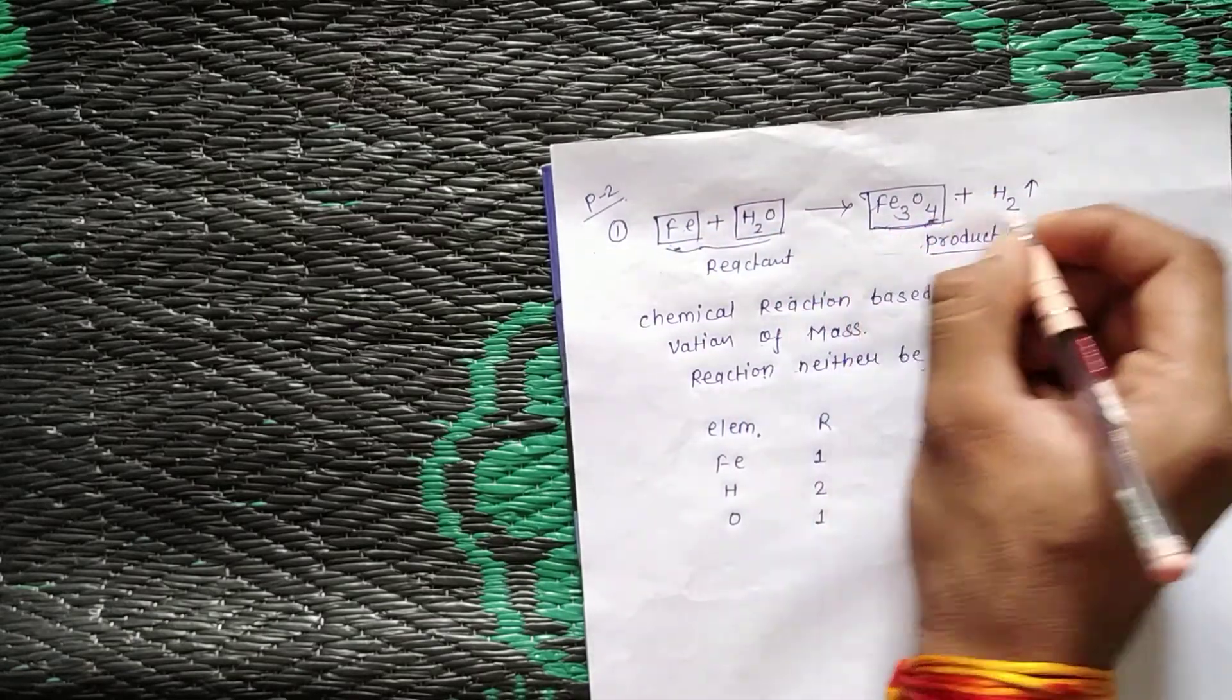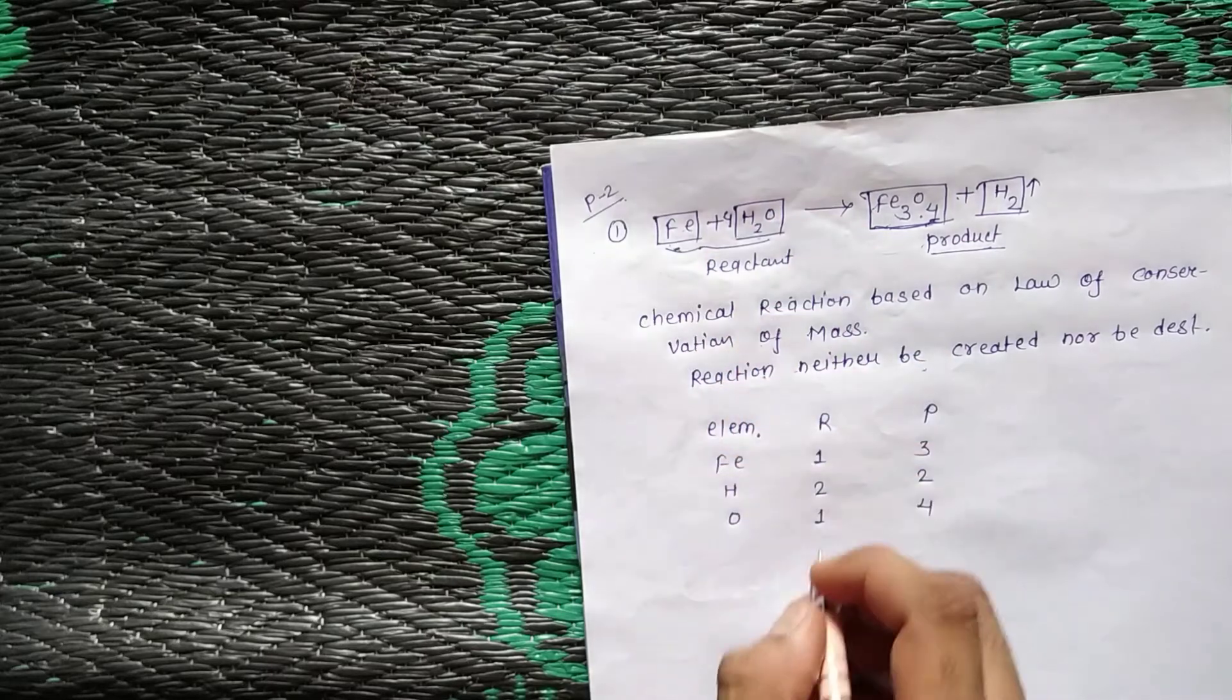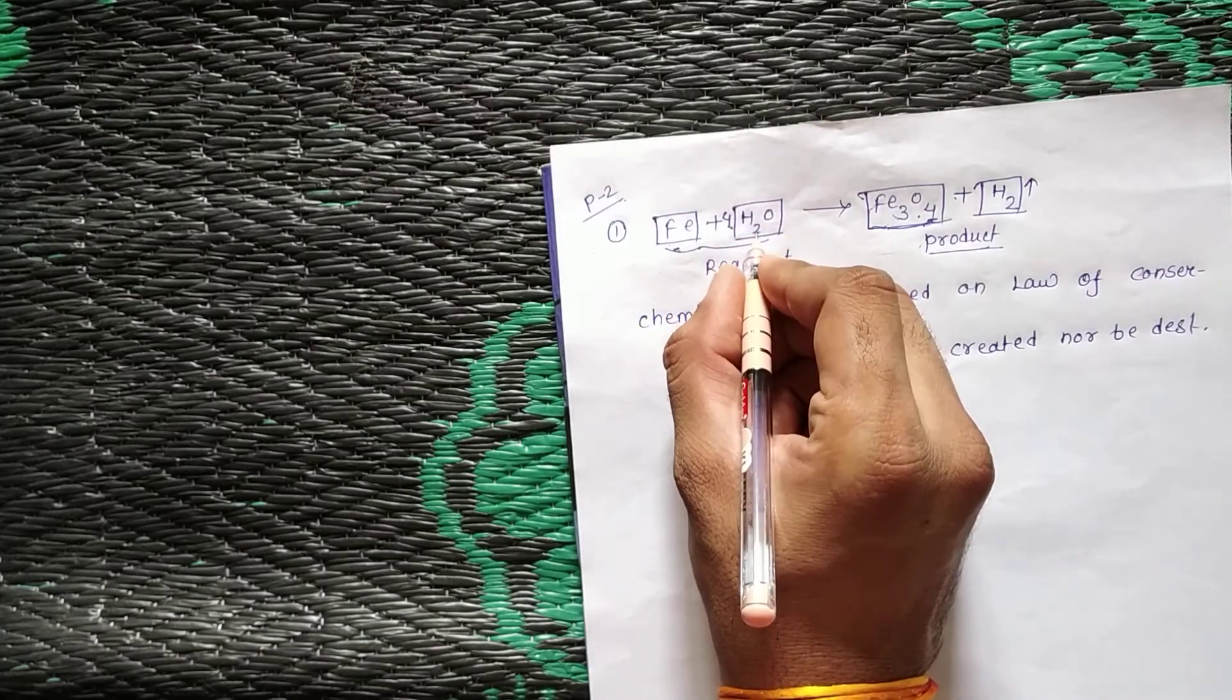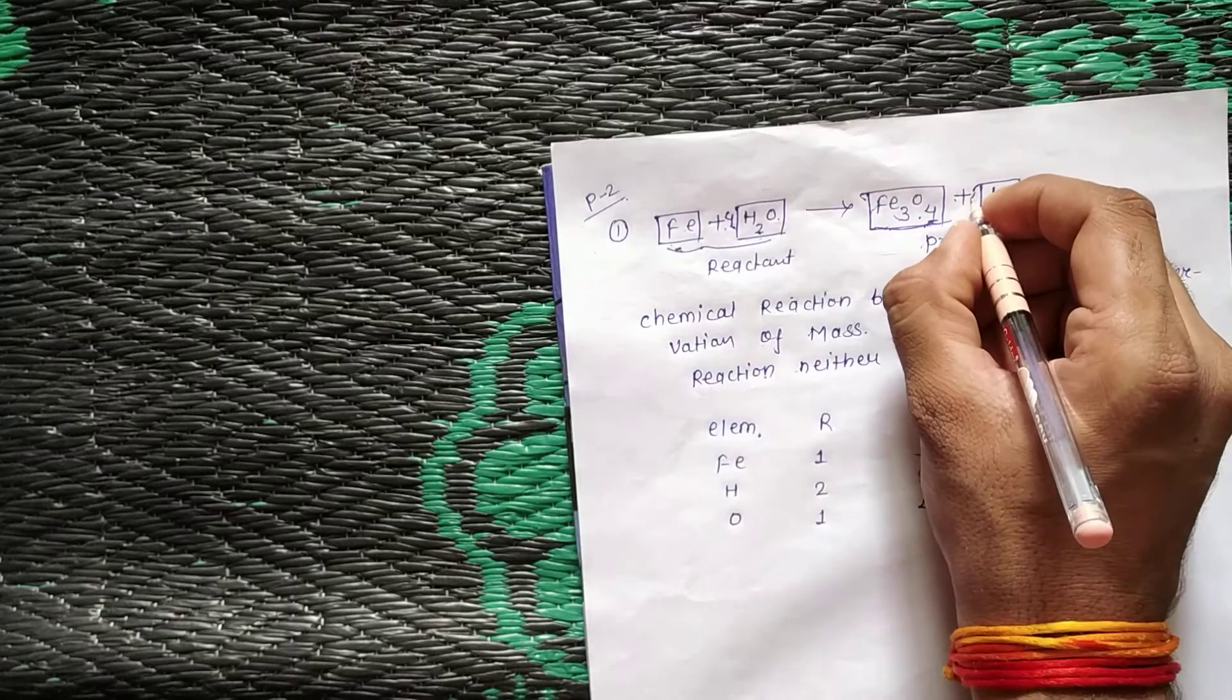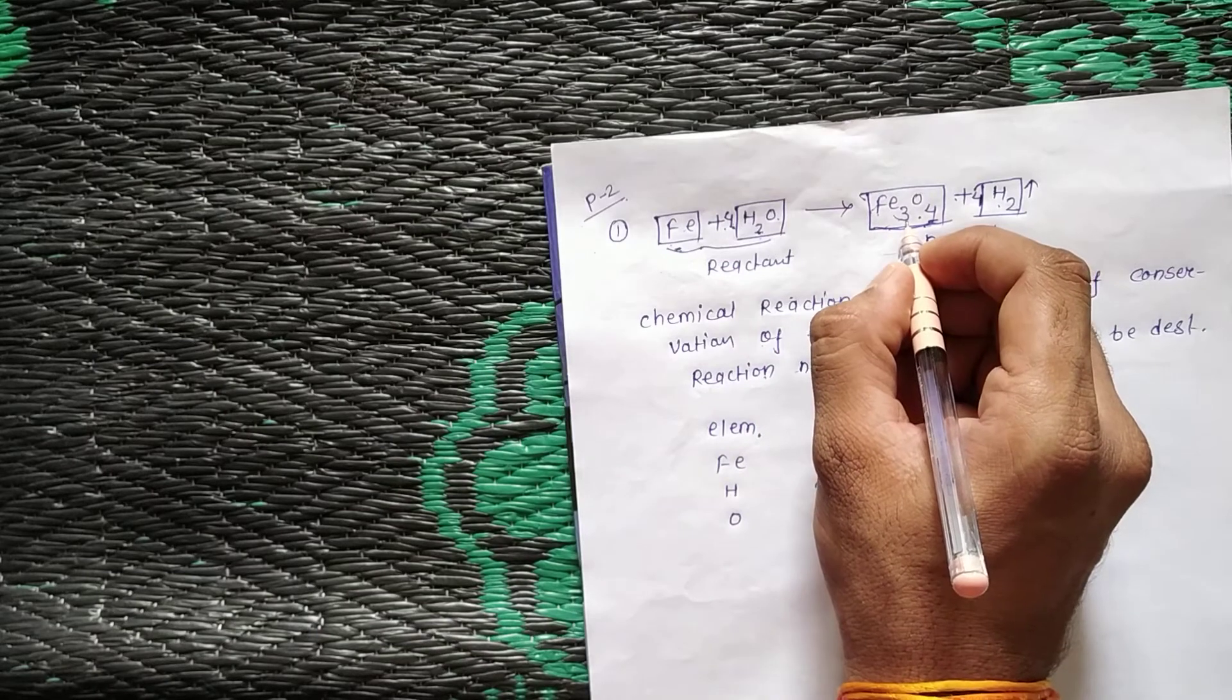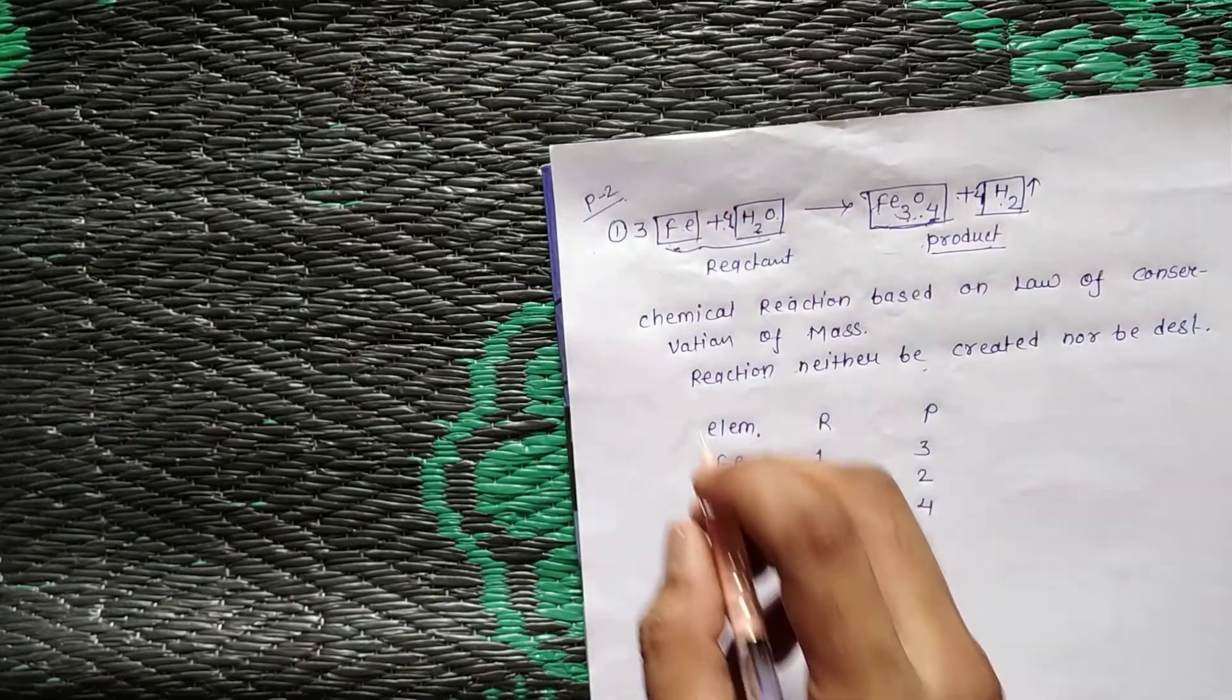During this chemical reaction, we have to balance using trial values: 2, 3, and so on.